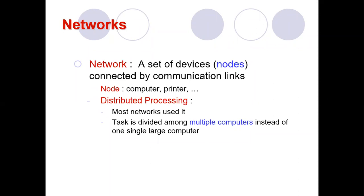Distributed processing is one in which a task is divided among multiple computers. Most networks use this type of processing so that connected devices can share or access information. Instead of one single large machine being responsible for every task, distributed processing divides the work among multiple computers that together complete the task.